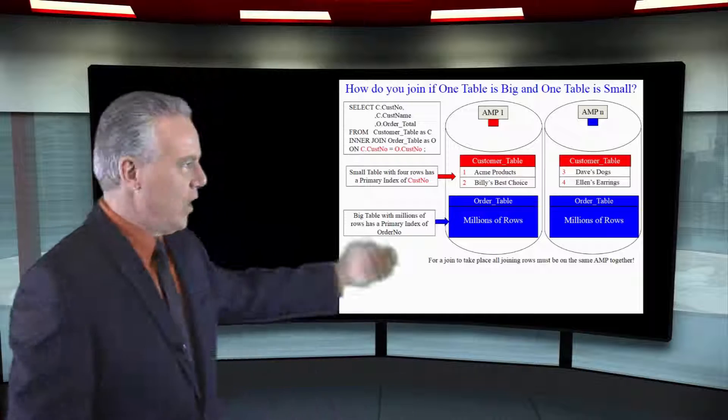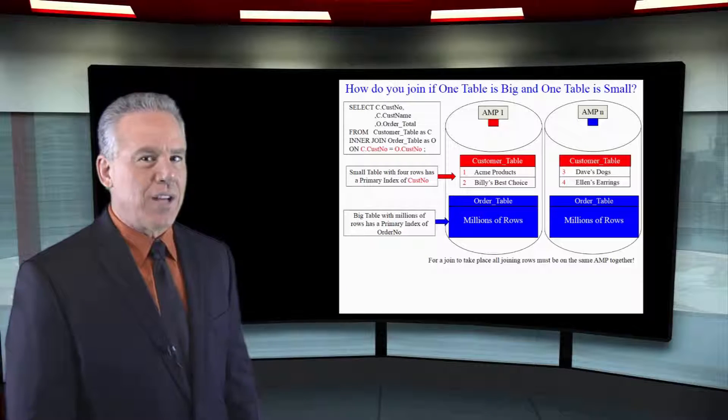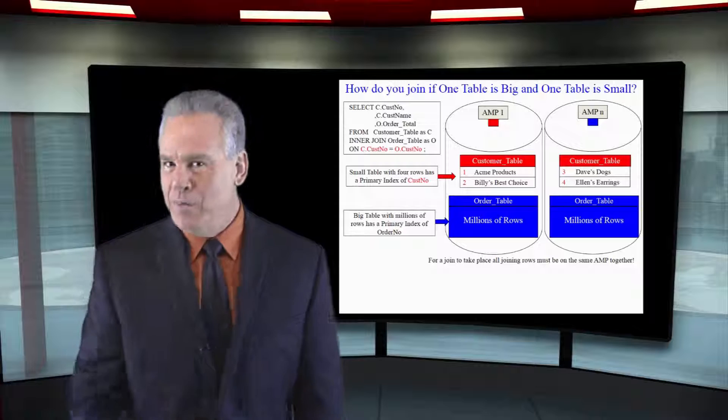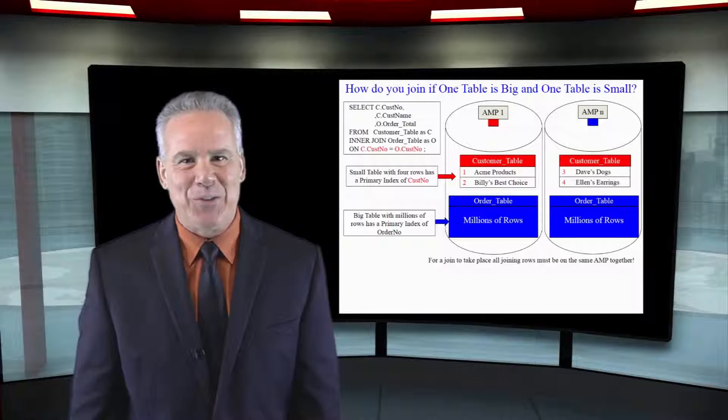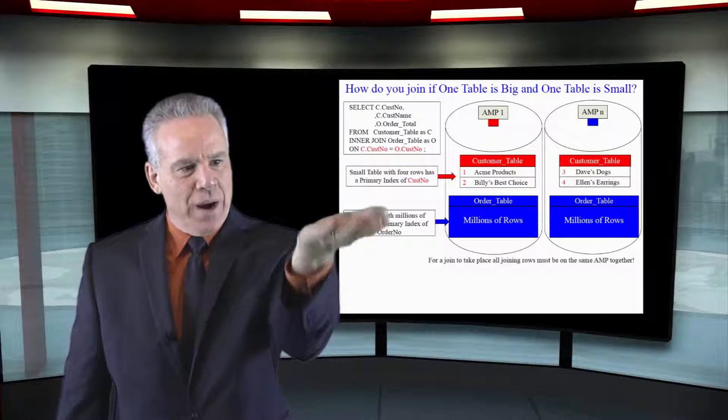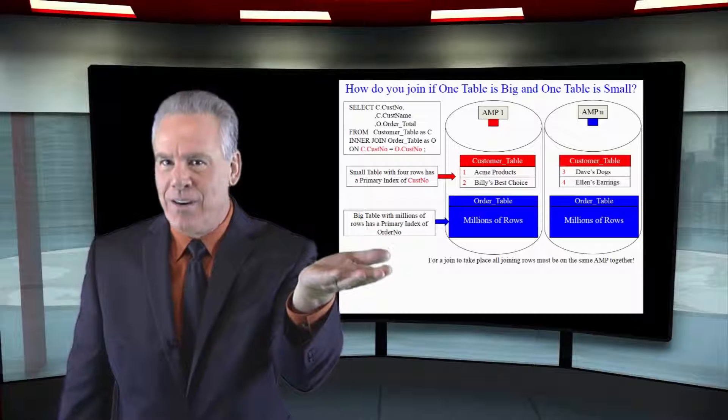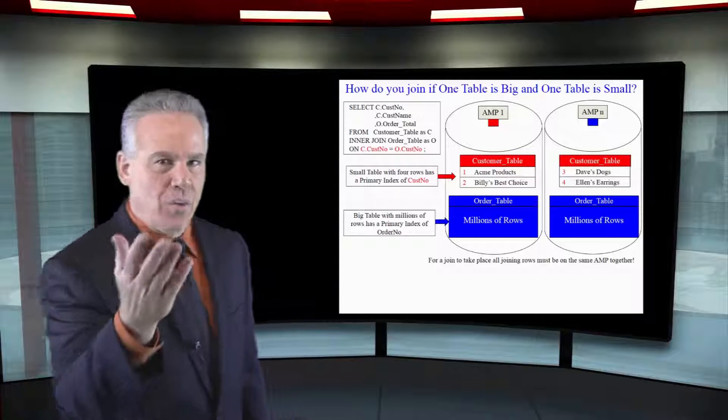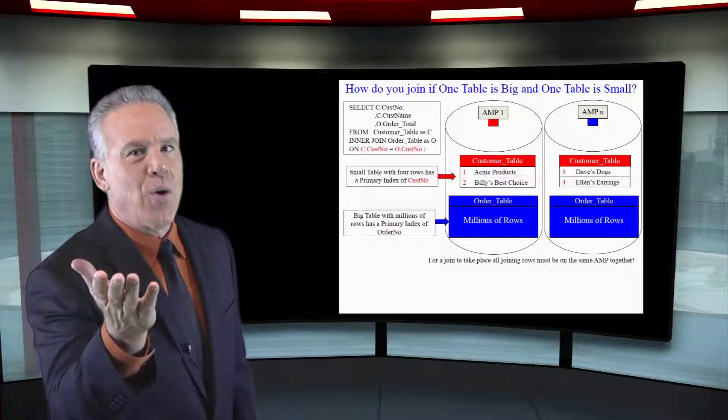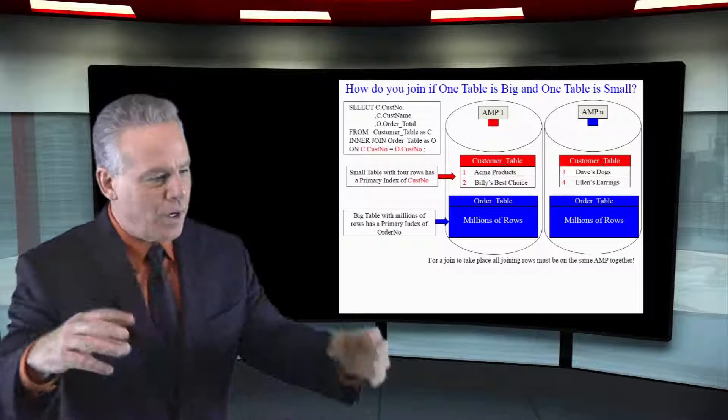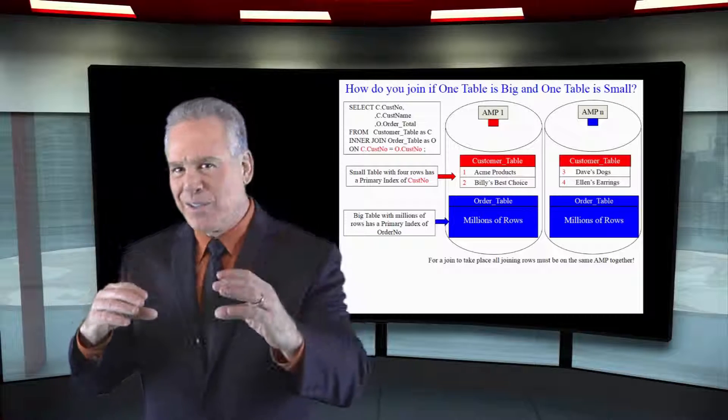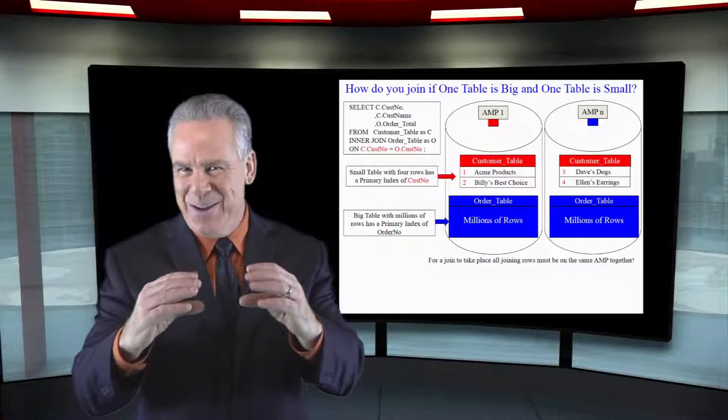Now take a look at this example here. We're joining customer table to order table and it's the same situation. The customer table's primary index is customer number. The order table's primary index, order number. Yet we're going to join on customer number equals customer number.